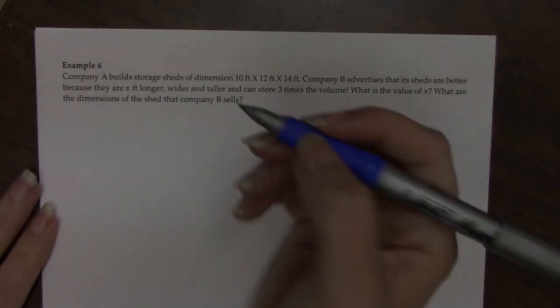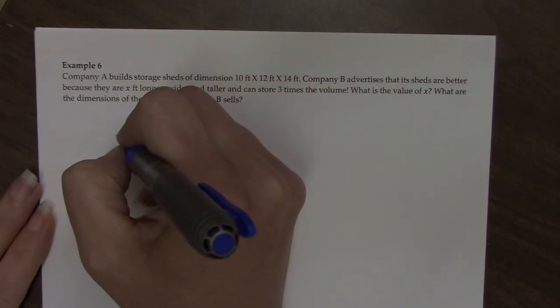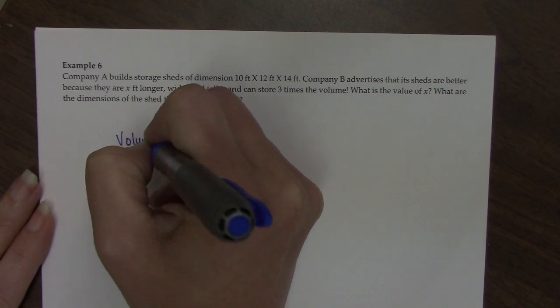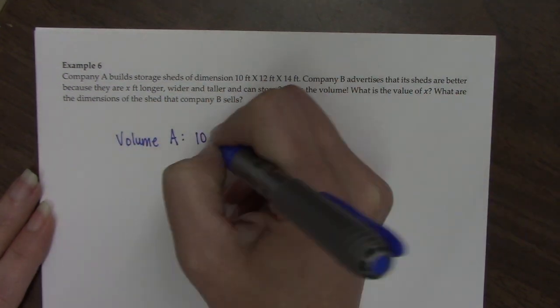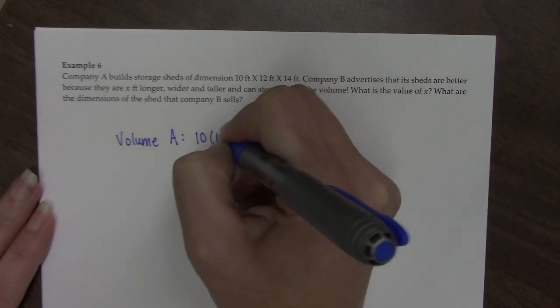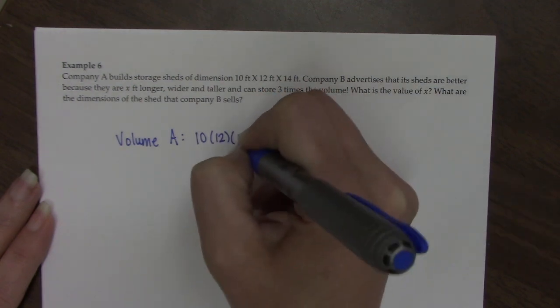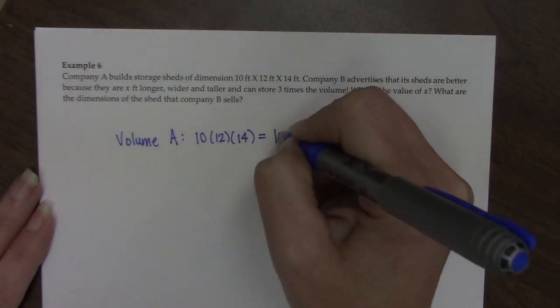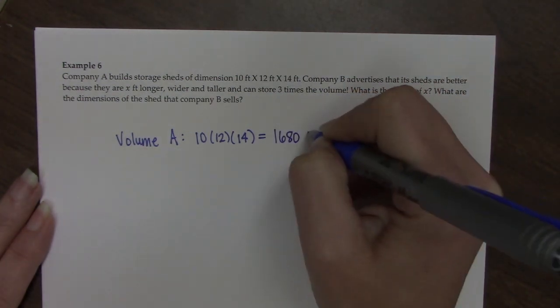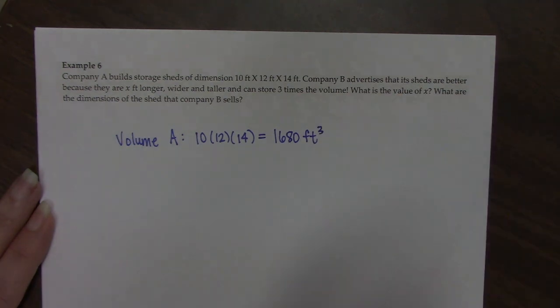Let's break down the information we were given. Company A builds sheds that have volume, and we can find that by doing the length times the width times the height. If we multiply these three numbers together, it's 680 cubic feet.